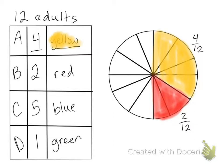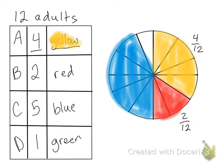Five people chose option C. And we're going to color that one in blue. So that's one, two, three, four, five. Color that in. And that's five twelfths.